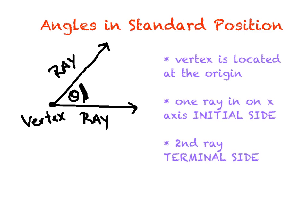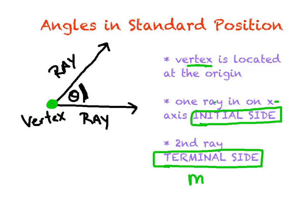In trig, here are the things we're going to worry about with our angles. Go ahead and copy these down. First, the vertex has to be located at the origin — this point right here in green has to sit right at the origin. One ray is going to be right on the x-axis, and this is called the initial side. The second ray is going to be called the terminal side, and basically this is the side that moves.